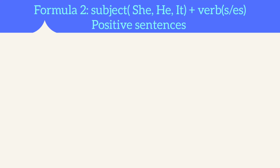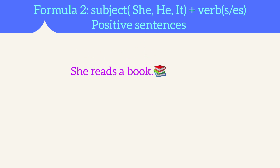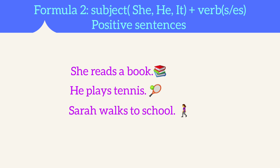Formula 2: Positive sentences. Subject: she, he, it — plus verb S or ES. For example: she reads a book. He plays tennis. Sarah walks to school. Sam teaches.